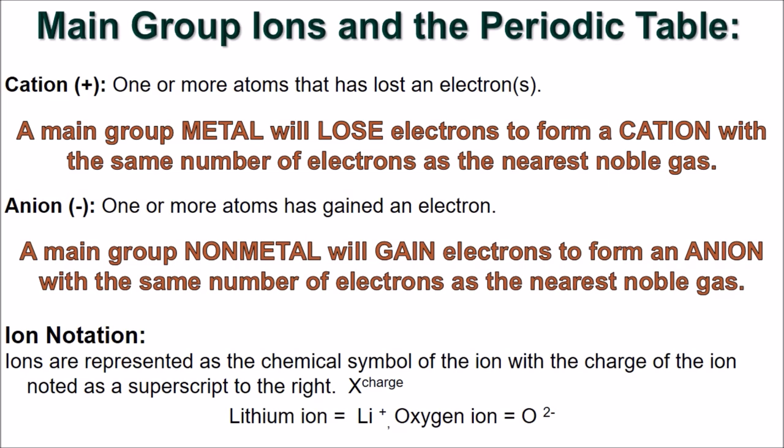More specifically, an atom that has gained an electron is called an anion and has a negative charge. An atom that has lost an electron is called a cation and has a positive charge.